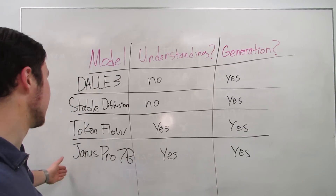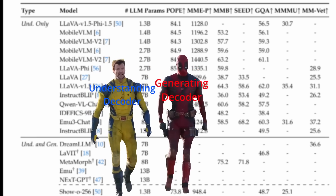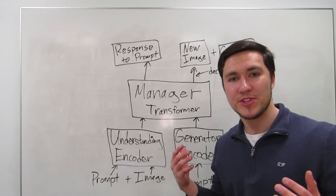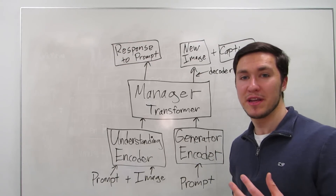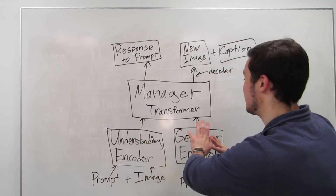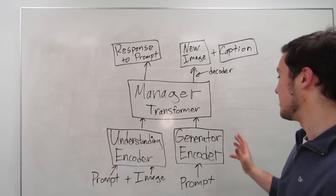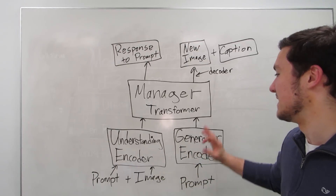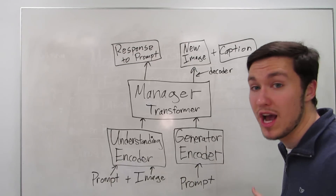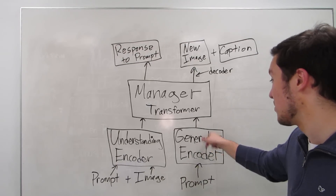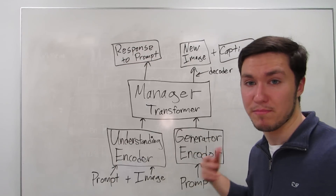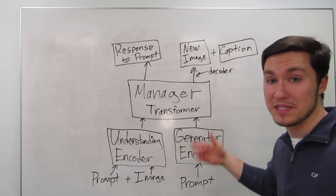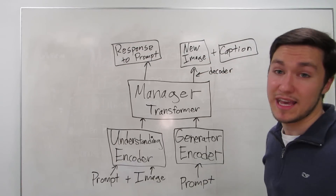Janus Pro 7B separates its understanding from its generation into two separate encoders. It connects both the understanding encoder and the generator encoder to what I call a manager — another transformer that delegates tasks to them. If I'm trying to generate a new image, I give Janus Pro a prompt which feeds into the generator encoder. The generator encoder extracts the important parts of the prompt and passes generation tokens to the manager transformer, which then uses those tokens along with its own weights and parameters to output the new image and a caption for it.